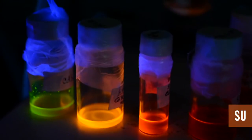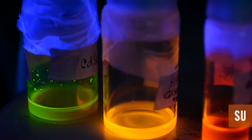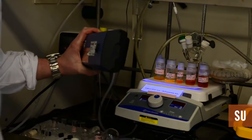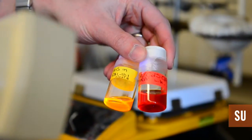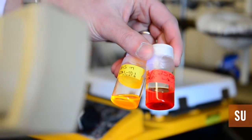So these are the quantum dot materials. Some of them have different brightnesses depending on their efficiency. Just by changing the size only a few nanometers or a few dozen atoms or so, you can manipulate their optical properties quite dramatically. You can see one emits in this orange and the other one emits in the red.